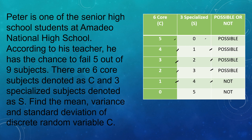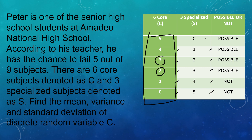You only have 3 specialized subjects, so 4 is not possible. And 0 and 5 is also not possible because you only have 3 specialized subjects. Therefore, the values of random variable C — since we're looking at the core subjects column — the only possible values are 2, 3, 4, and 5. That's the reason why C equals 2, 3, 4, and 5.